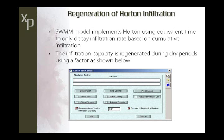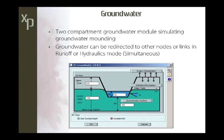The groundwater capability in XPSWMM is a two-compartment groundwater model that simulates mounding — the rise and fall of the groundwater table. Groundwater can be redirected to other nodes and links, and in hydraulics mode, it can be redirected if you choose simultaneous solving of runoff and hydraulics. There's a groundwater outflow equation, and you can describe evapotranspiration from upper and lower zones, enabling thorough surface water-groundwater interaction on a continuous basis.